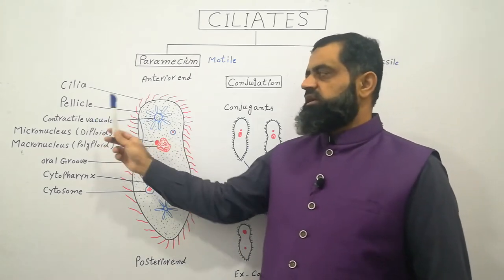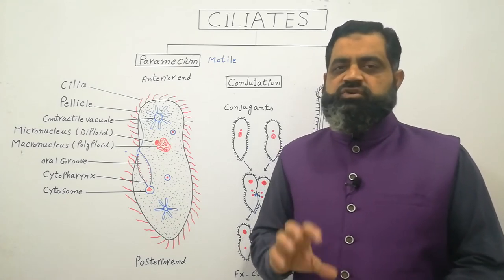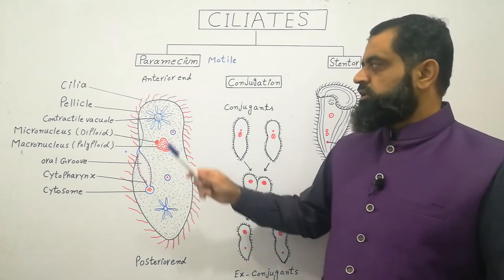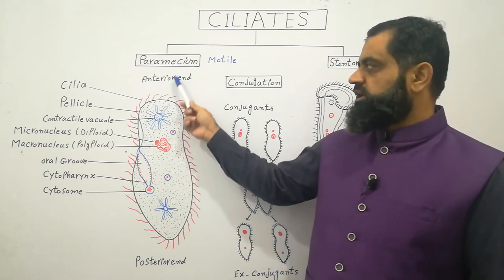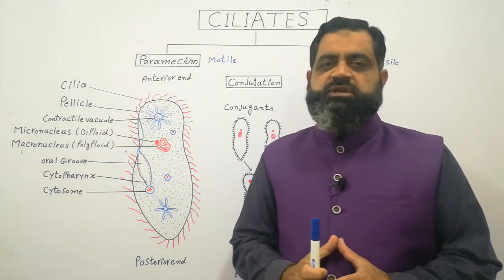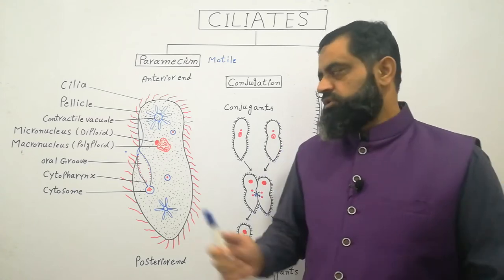The function of contractile vacuole is to absorb extra water from their bodies and throw it out from the body. There are two contractile vacuoles, one on the anterior end and one on the posterior end. Both contractile vacuoles use ATP energy and continuously pump out the extra water coming into their body.